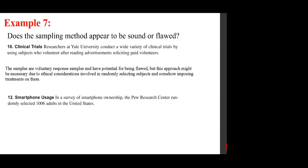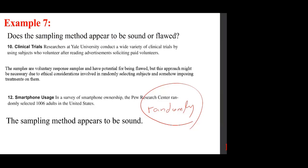In a survey of smartphone ownership, the Pew Research Center randomly selected 1,006 adults in the United States. This seems to be a decent sampling method — Pew Research Center is normally done properly. The key word is 'randomly.'